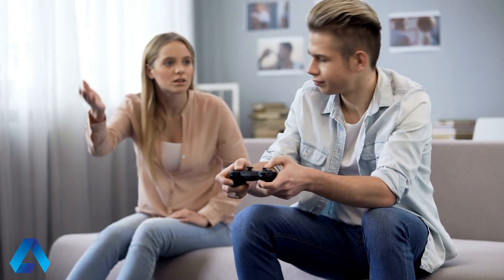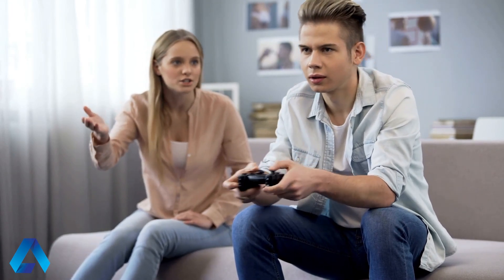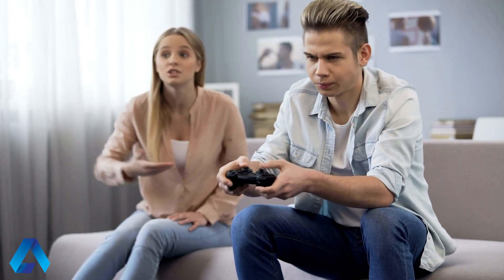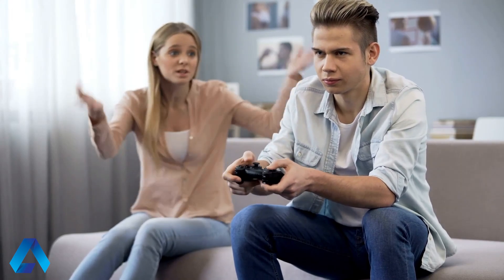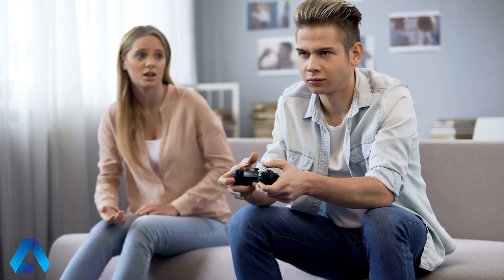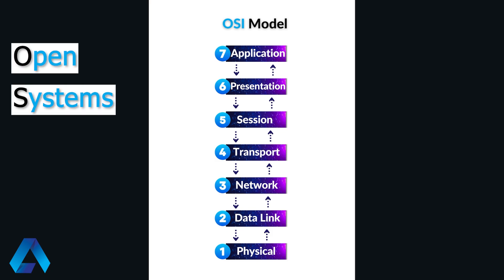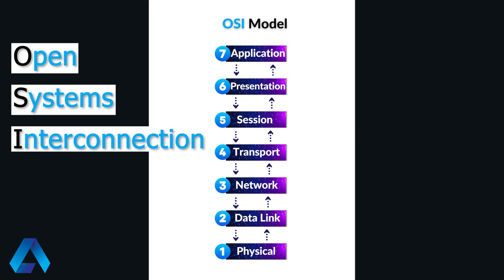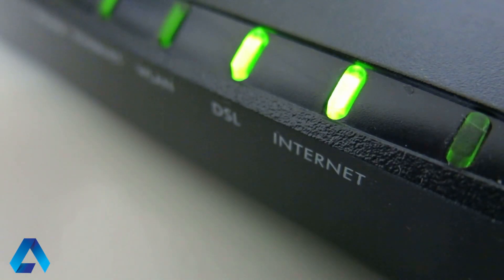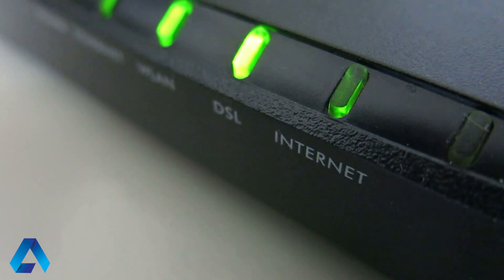Have you ever tried to have a conversation with someone and realized that you're getting nowhere? It turns out that this used to happen a lot before the OSI model came along. What is the OSI model? OSI stands for Open Systems Interconnection and it is a conceptual model that describes how data is transmitted and received over a network. The OSI model was introduced in the mid-80s in order to allow electronic devices to communicate with one another.